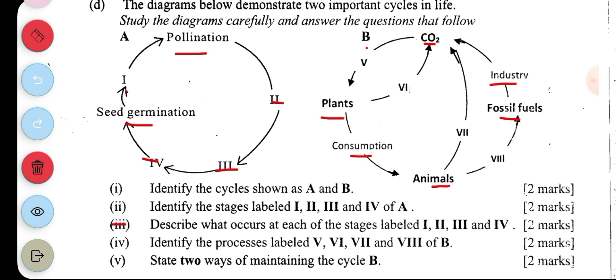Then question four is asking us to describe what occurs at each of the stages labeled one, two, three, and four. So at the maturation, that's a growth stage. That's where you begin to see the leaves becoming more visible and larger and the roots penetrating deep down into the soil.